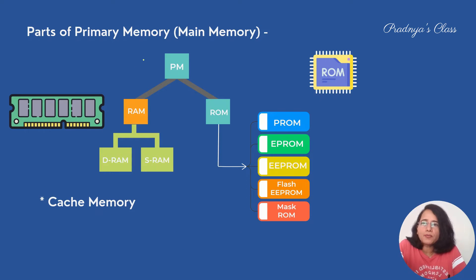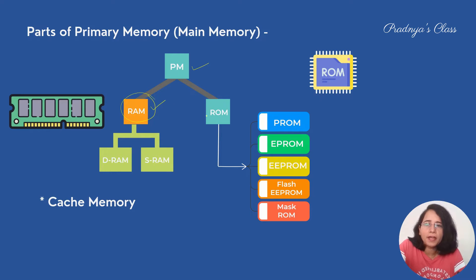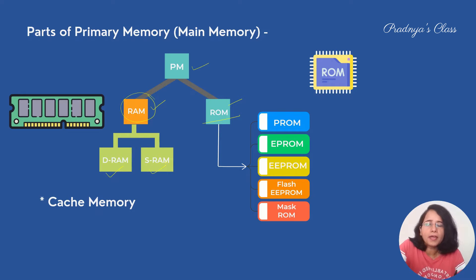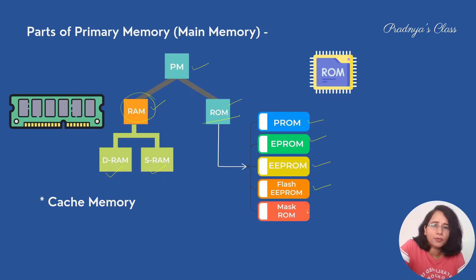Now let's study the types of memory. Primary memory is divided into two parts: the first is Random Access Memory, RAM, and the second is ROM, Read-Only Memory. RAM is further divided into DRAM (Dynamic RAM) and Static RAM. ROM has different variations: PROM, EPROM, EEPROM, Flash EEPROM, and Mask ROM.